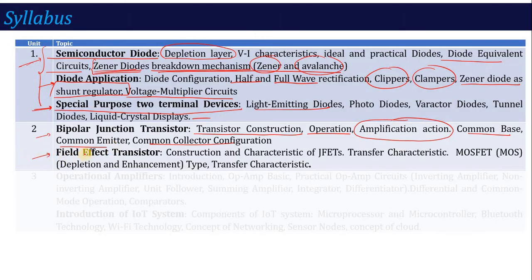Similarly, in unit number 2, we will talk about FET — field effect transistor. BJT is a current amplifier, whereas FET is a voltage amplifier. We will talk about construction and characteristics. In FET, you will study two types: one is JFET and one is MOSFET. MOSFET also includes depletion and enhancement types. We are going to study all these field effect transistor constructions and characteristics in this unit.